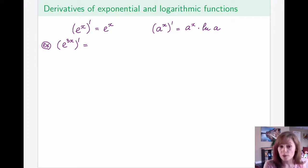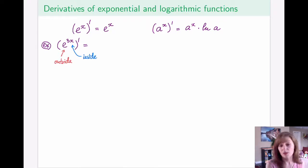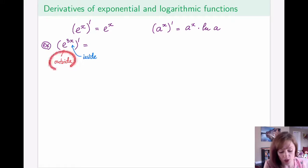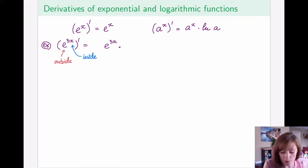We have to pause and think about what is the inside and what is the outside function. The function e is the outside, and the power 3x is the inside function. The chain rule says to first take the derivative of the outside function, keeping the inside as it was. The outside function is e to some power, whose derivative is itself — so the outside derivative is simply e to the power 3x.